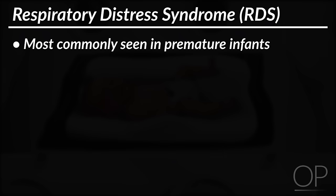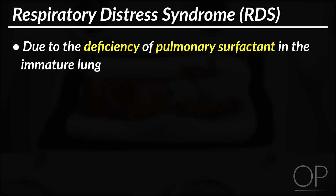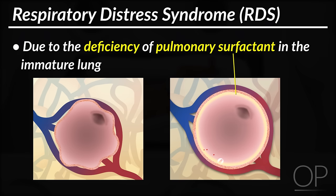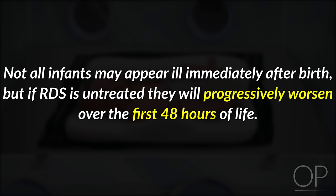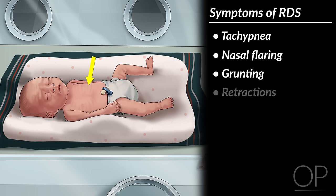Respiratory distress syndrome, RDS, is a disease most commonly seen in premature infants, with the frequency decreasing significantly after 37 weeks gestational age. RDS is due to the deficiency of pulmonary surfactant in the immature lung. Surfactant is a phospholipid that decreases the alveolar surface tension, which helps with alveolar expansion and decreases risk of atelectasis. Not all infants may appear ill immediately after birth, but if RDS is untreated, they will progressively worsen over the first 48 hours of life. Symptoms include tachypnea, nasal flaring, grunting,